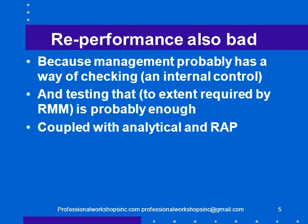Re-performance is also bad because, probably, if there's something we're worried about going wrong, management is far more concerned about the same issue than we are. Accordingly, they have a way of checking — what we call an internal control — a way of making sure that all sales are recorded and priced correctly. The clever way of doing the audit is to follow along what management did. There may be a high-level control we can follow to make sure things are being done correctly, and that should be efficient, effective, quick, and not boring. Coupled with our analytical procedures and risk assessment procedures, that should probably be enough to prevent us from having to re-perform a bunch of transactions.